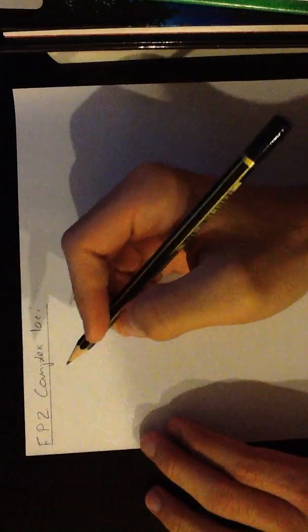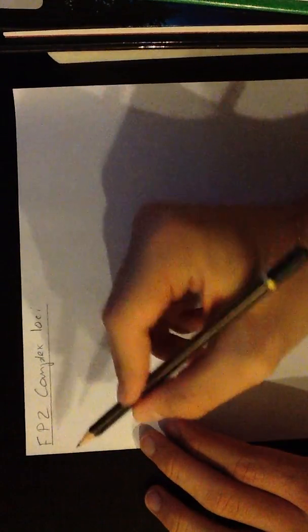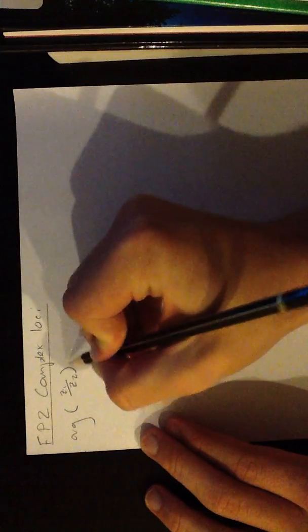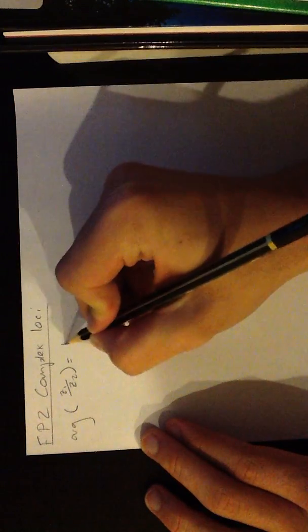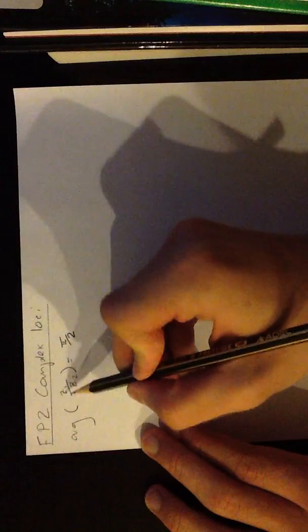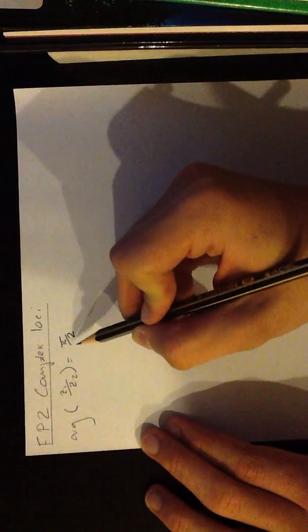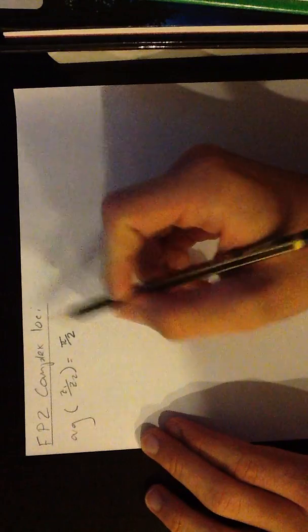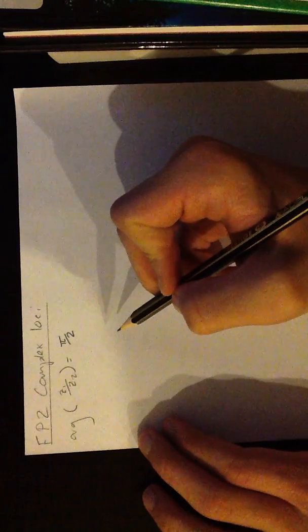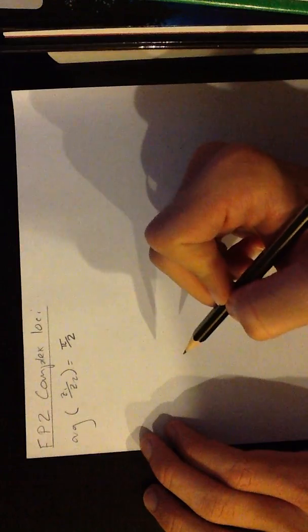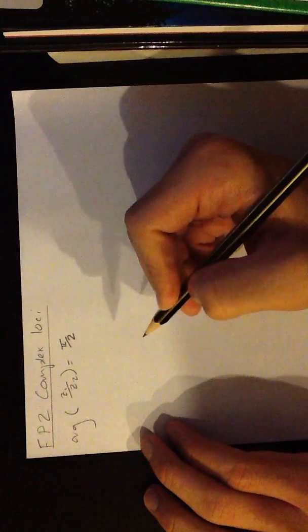Hello, I'm going to show you how to solve these types of questions in FP2. We have one complex number divided by another complex number, the argument of that equalling an angle. In FP2 they show you a rather weird method which I personally don't like, and I'm going to show you how to solve this algebraically.